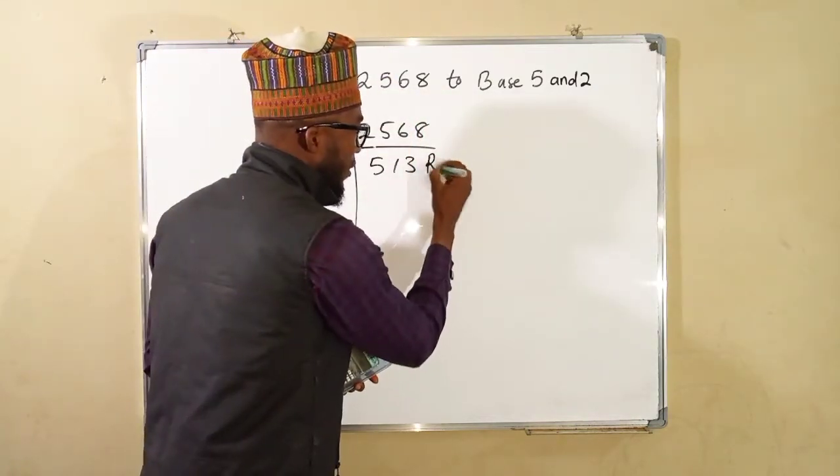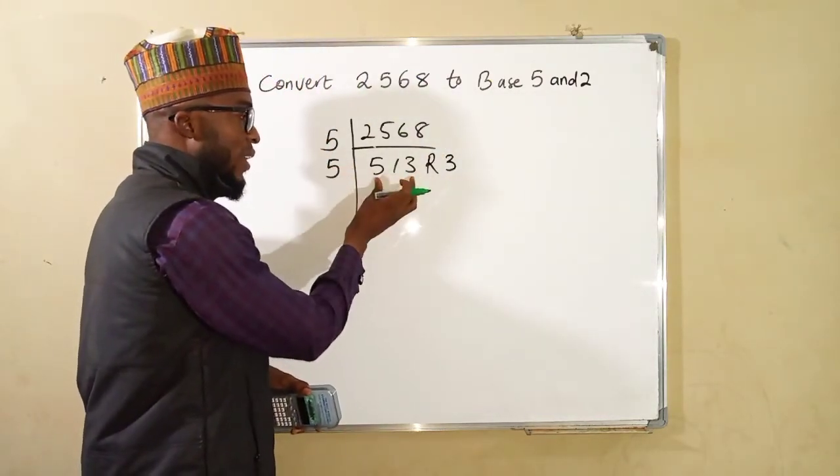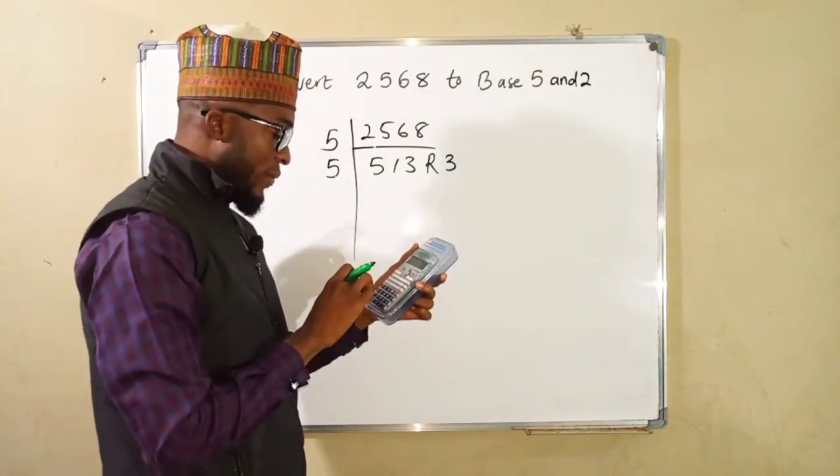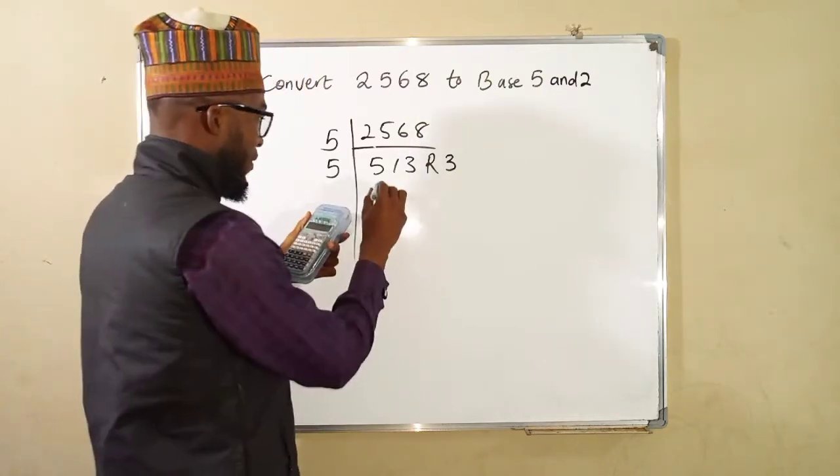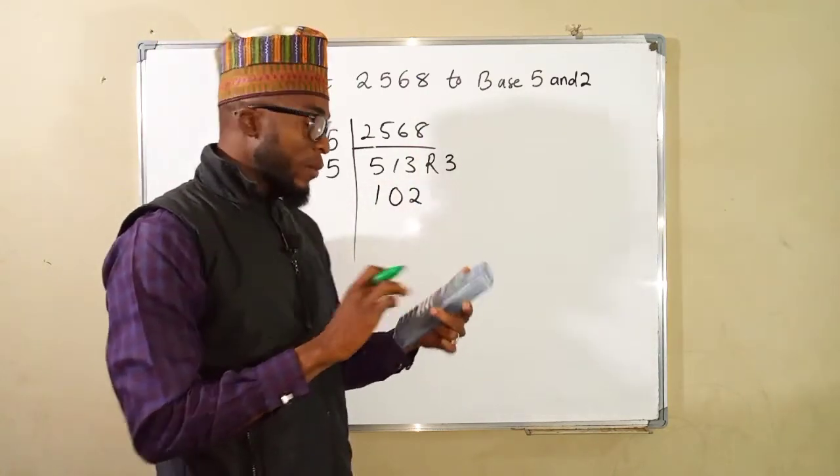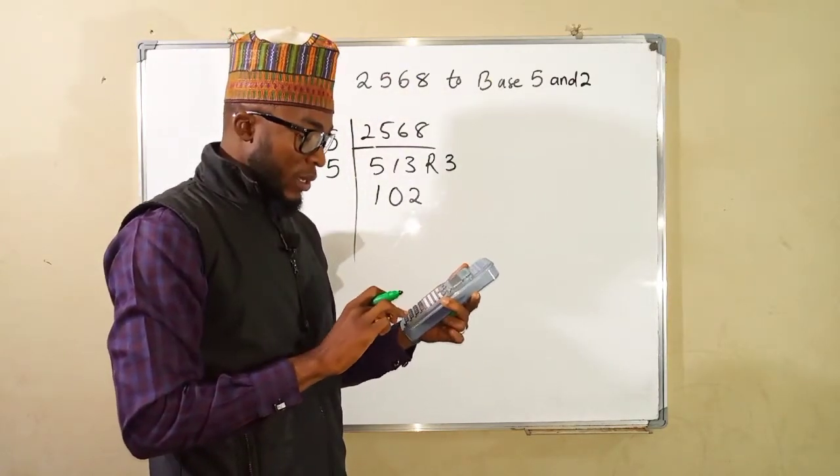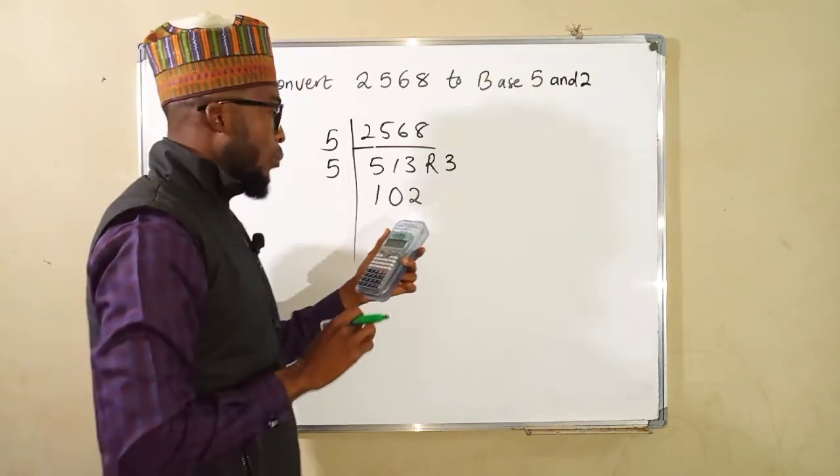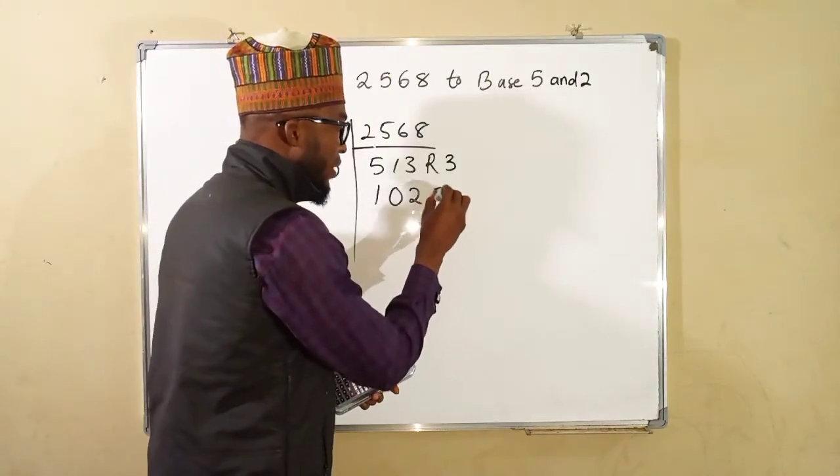We continue, we divide this number by 5 again. 513 divided by 5 what I have here is 102. To obtain the remainder we say 102 times 5, we have 510 but this is 513, this means that we also have a remainder of 3.